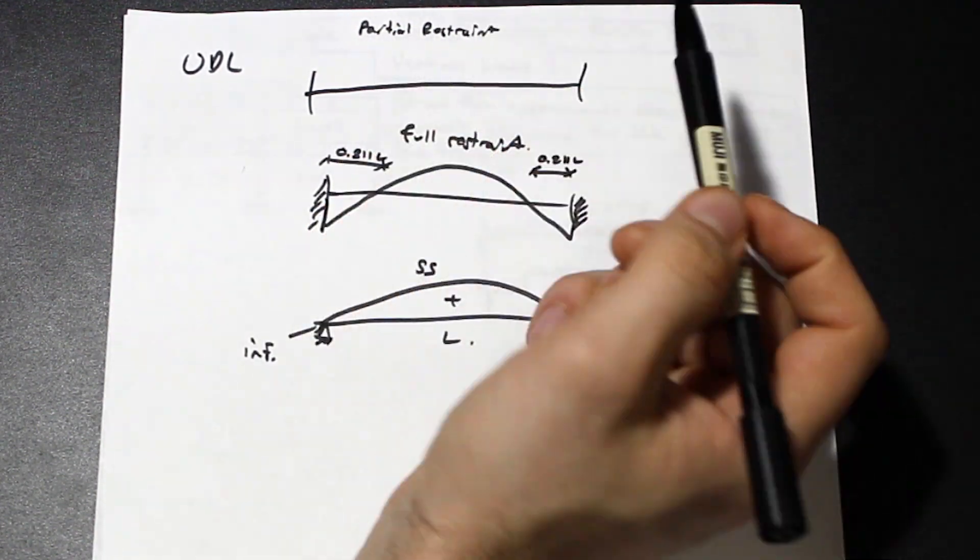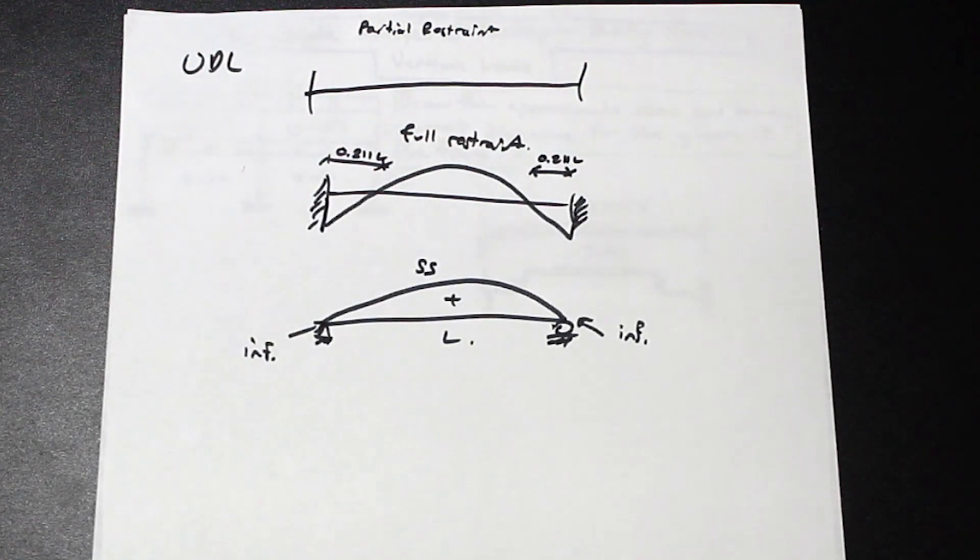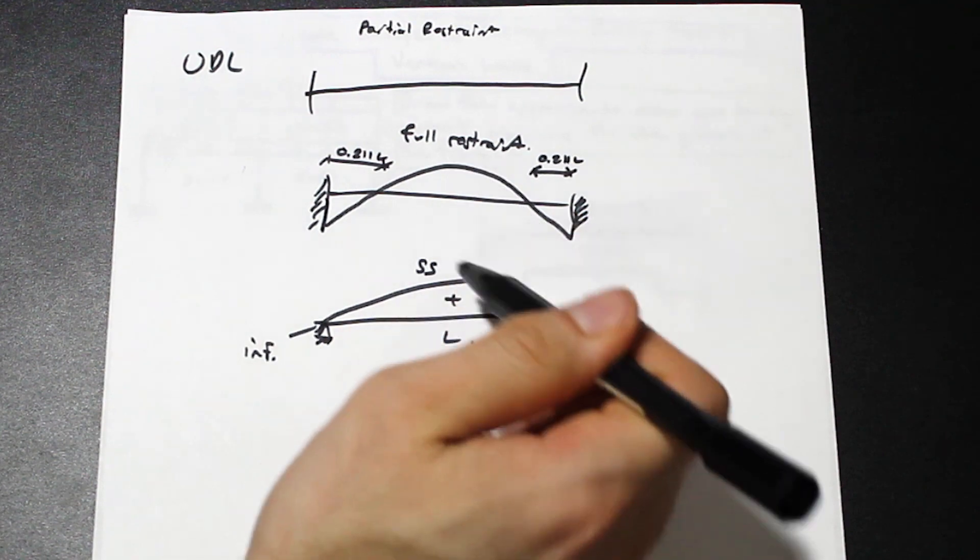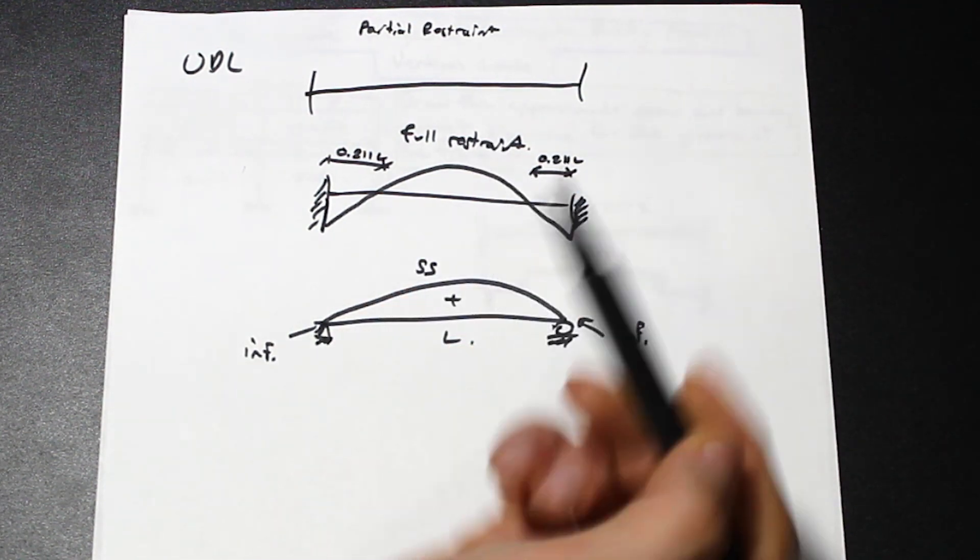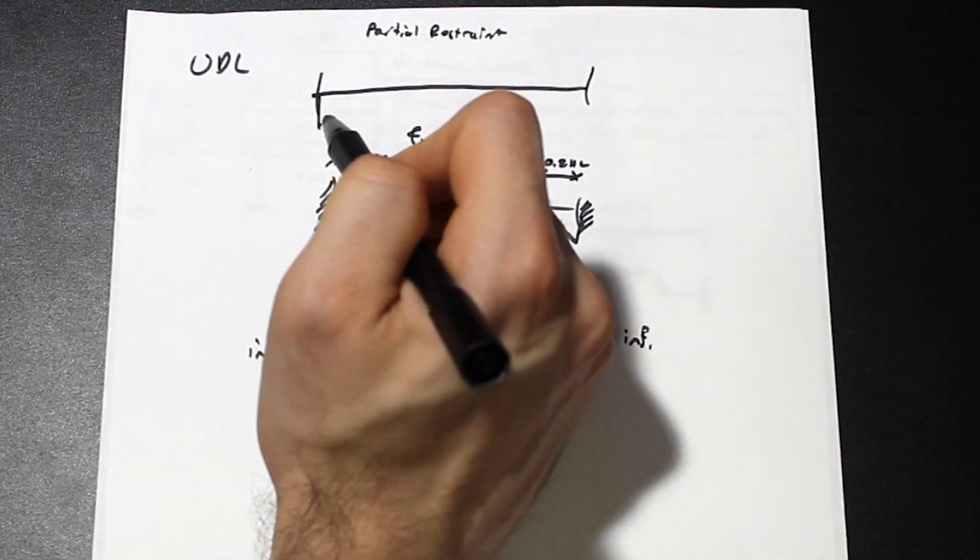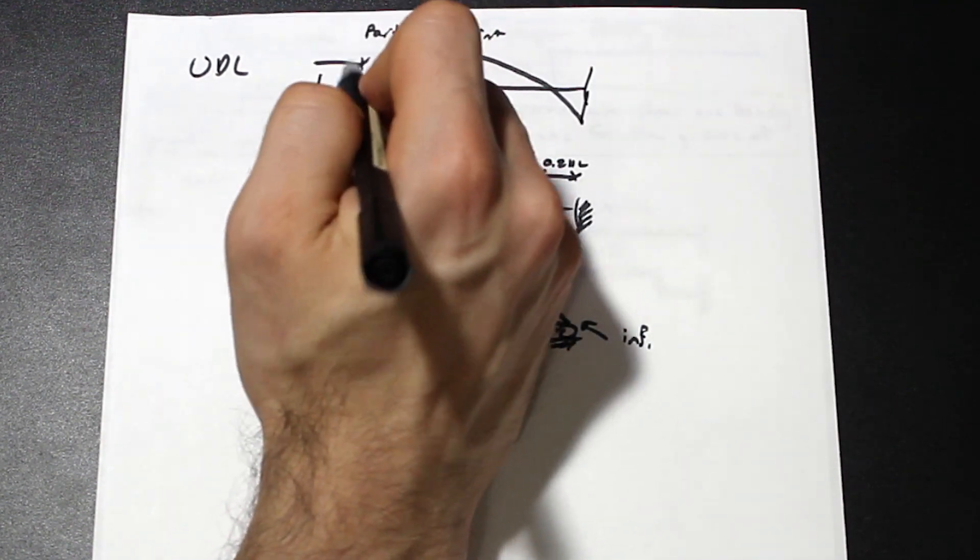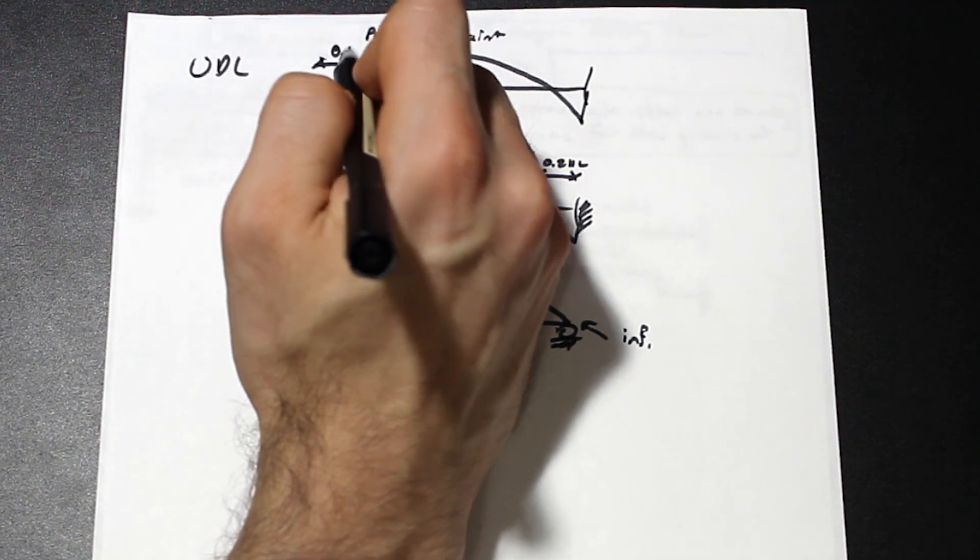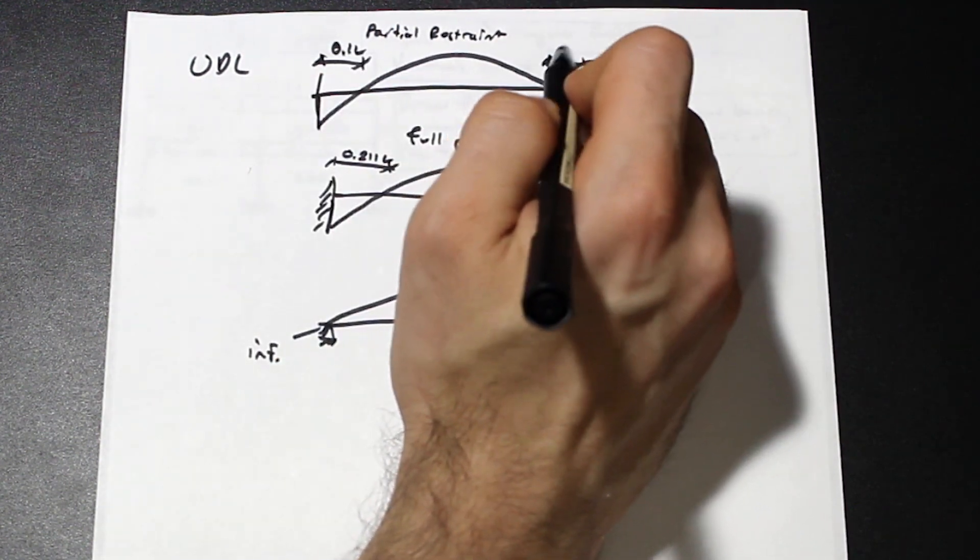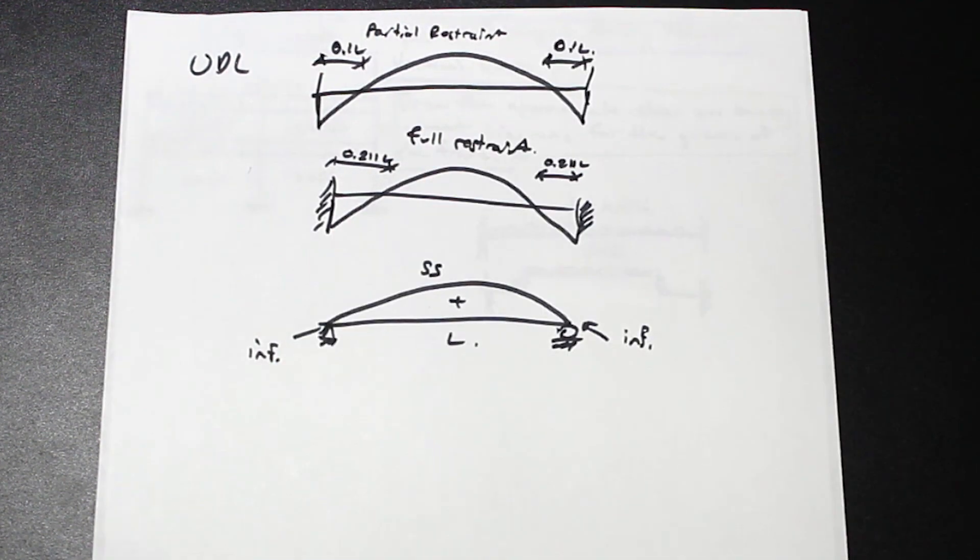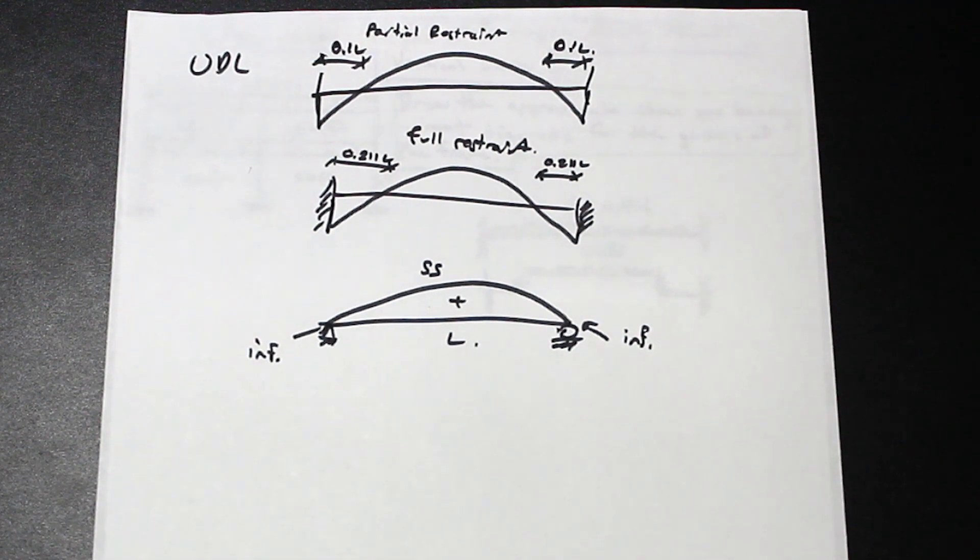However, if the support is partially restrained, i.e. we don't really know how much restraint is in it, or we're not sure if it's somewhere in between fully and simply supported, what we do is we make the assumption that the moment changes from positive to negative at 0.1L. So that's one of the assumptions that we make in this method. And that's the one that we're going to use for this question.